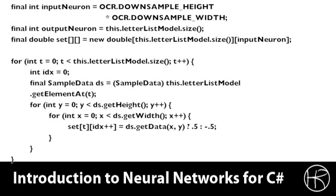Here you see the code that generates the training data. We first calculate how many input neurons we're going to have — this is the downsampled height times the downsampled width. As you saw in a previous part, this would be 8 by 8, or 64. The output neuron count is the number of letters we have, so 26 potentially if it's 26 English letters. Then we loop over the entire list of our characters and retrieve them one by one. The two nested X and Y for loops inside the outer loop basically loop across all of the height and width samples, creating a value of 0.5 if the pixel is solid or negative 0.5 if the pixel is not solid. This creates the training data.